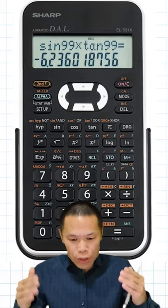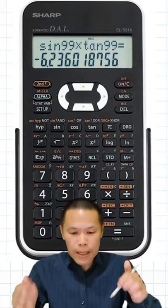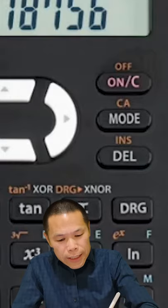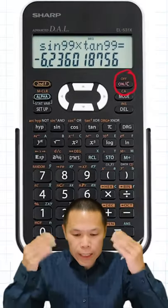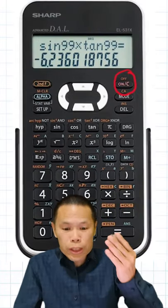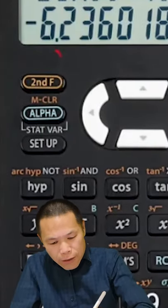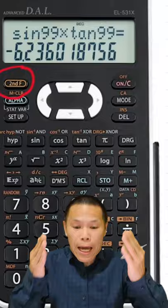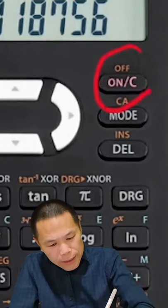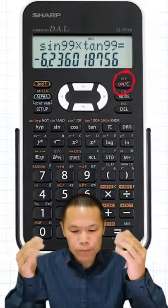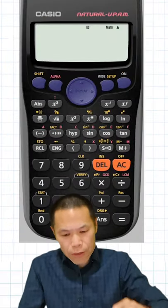If you have a Sharp calculator, you can see the ON button here. Underneath there is an OFF there. So to do this, to turn it off, what you do is press the second function and after that you press the ON button. Your calculator should turn off.